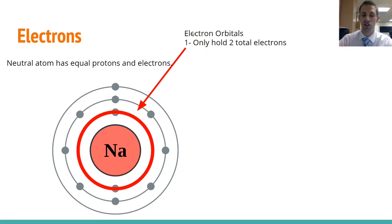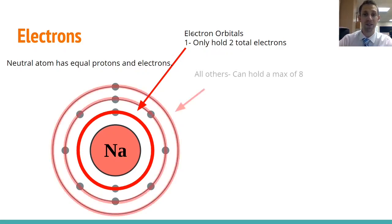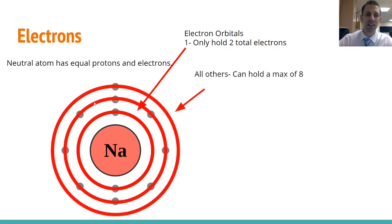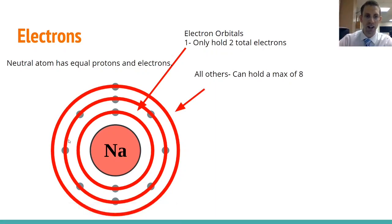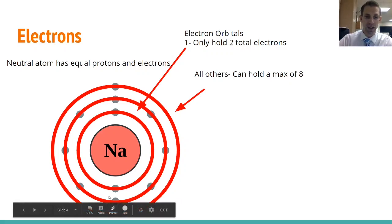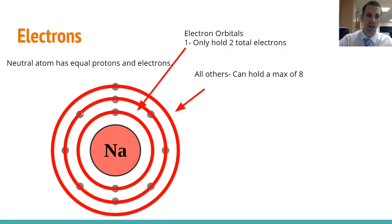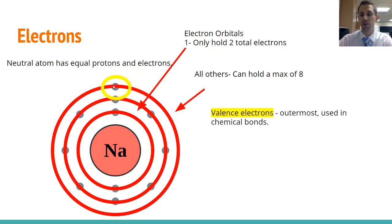We'll move to the next shell out. The shells after that can hold a maximum of eight electrons. If I count the second ring, there are eight electrons total. So if I take the two from the first ring and the eight from the second ring, that's ten. I told you there were 11 electrons total in a neutral atom of sodium. That means we're going to have one electron in this outermost level. That outermost electron has a name: valence electrons.